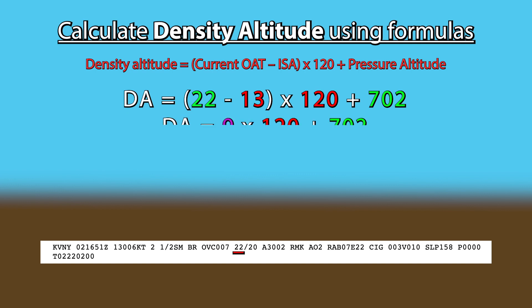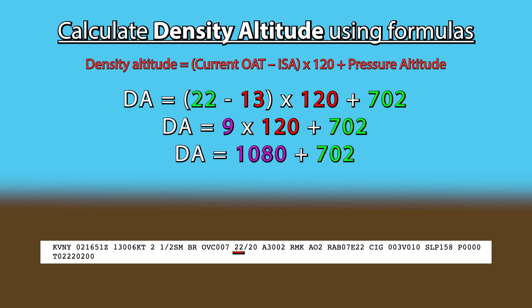So, 22 minus 13 equals 9. 9 times 120 equals 1080. 1080 plus 702 equals 1782. The current density altitude is 1782 feet. I hope this made sense.